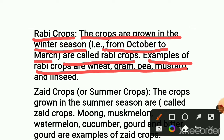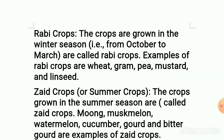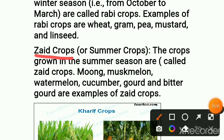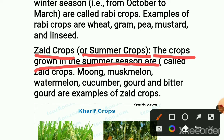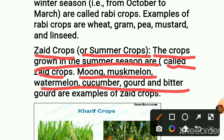The third type is Zaid crops. Zaid crops are summer crops — Zaid crops is also known as summer crops because it is grown or sown in summer season. The crops grown in summer season are called Zaid crops. Examples: moong, muskmelon, watermelon, cucumber, gourd, and bitter gourd are examples of Zaid crops. This Zaid crops is only sown in summer season, during April and May.